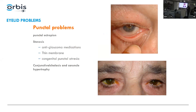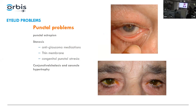When looking at punctal problems: look for punctal ectropion — the punctum being out can cause tearing. Look for punctal stenosis, which can occur in trachoma patients or glaucoma patients on glaucoma medications. In congenital cases, children can be born with a membrane over or without a punctum. Punctal ectropion with the punctum out means it's not draining any tears.